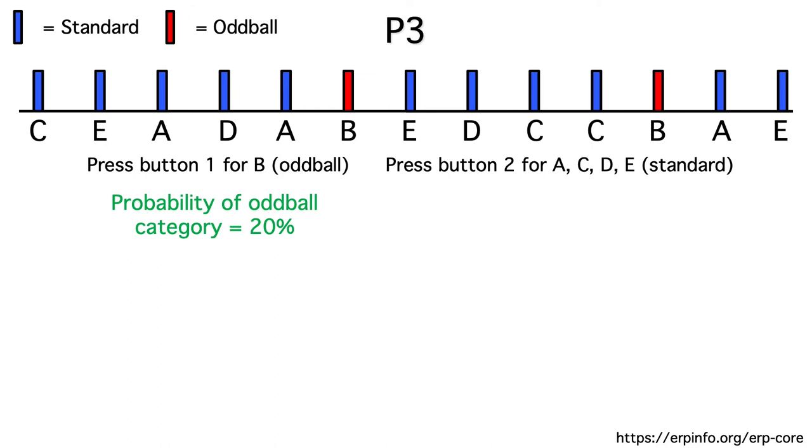This task requires classifying B as one category with a probability of 20%. And it requires grouping the other four letters together as a separate category with a probability of 80%. Although each individual non-target letter has a probability of 20%, they're grouped into a task-defined category with a probability of 80%.